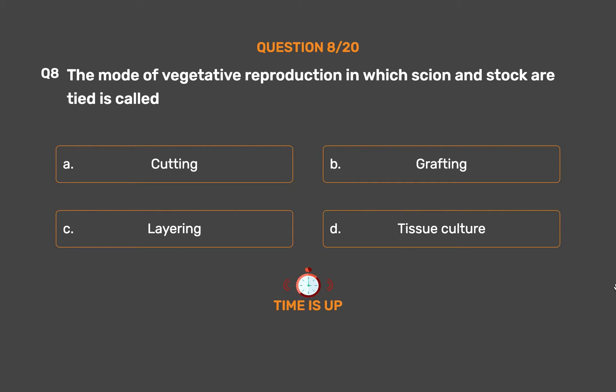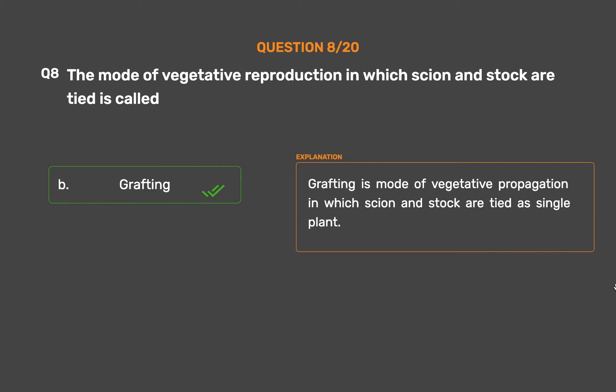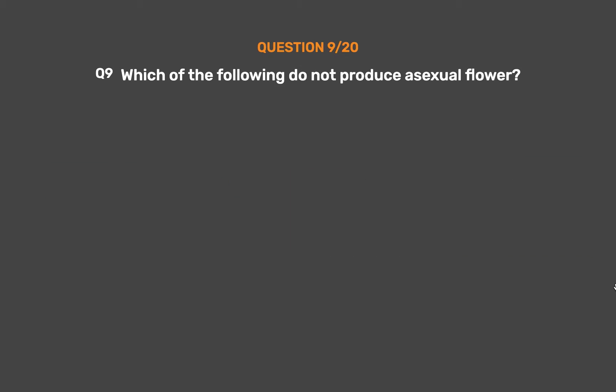The correct answer is Option B – Grafting. Grafting is a mode of vegetative propagation in which a scion and rootstock are tied together as a single plant.